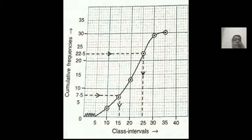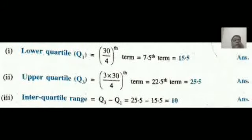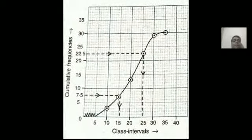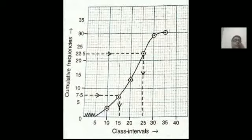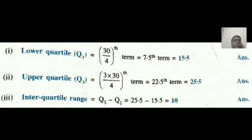And accordingly, it is coming after 15. Similarly, upper quartile Q3, that is 3N by 4, so 3 into 30 by 4 is 22.5. This is 20, so 22.5, you can see back, 22.5, it is getting here, after 25, the value is approximately 25.5. So Q1 is equal to 15.5, Q3 is 25.5.